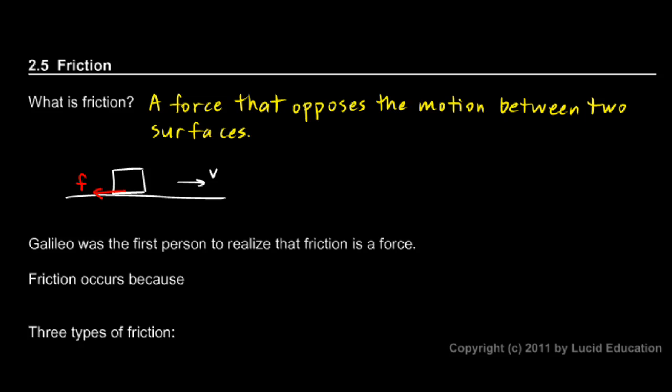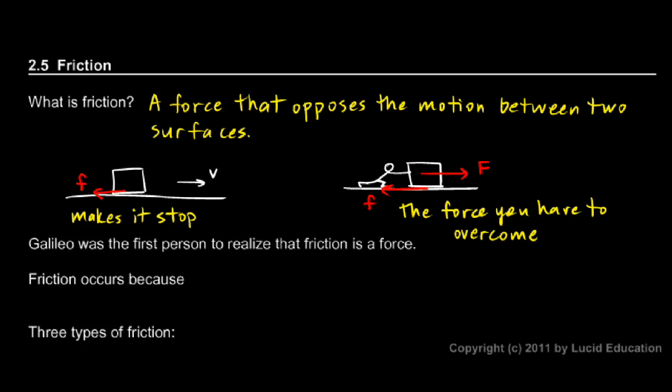The force of friction is the force that makes it stop. Friction always opposes the motion. If you're pushing a box, exerting a force this way, friction is working against you. We'll call the force that you push with big F and the friction little f. Friction is the force that you have to overcome. You have to push harder than the force of friction in order to get that box to accelerate.